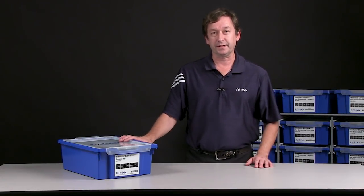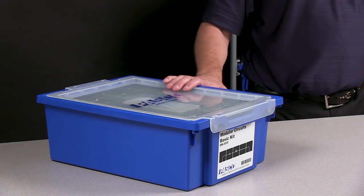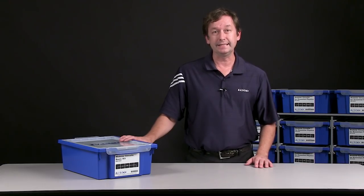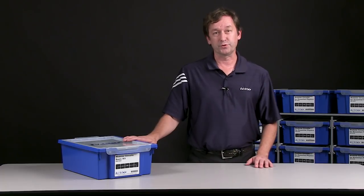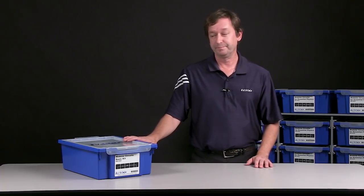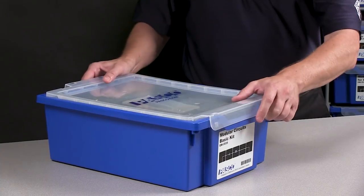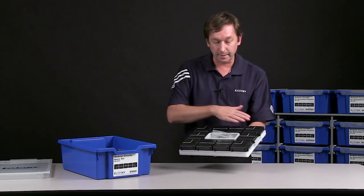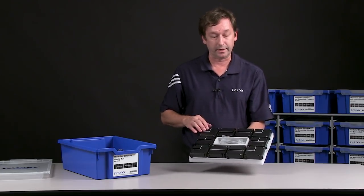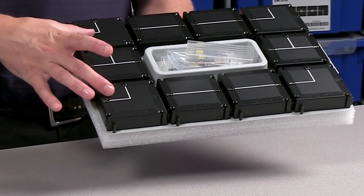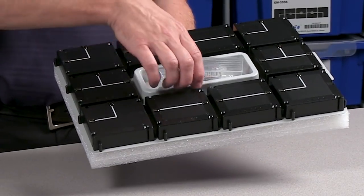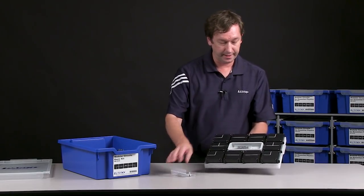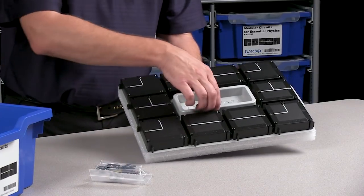So let's take a look at Modular Circuits, the basic kit. Each of the Modular Circuits kits comes in a Gratnells storage tray, which makes a nice, easy, convenient solution for storing all the modules in your classroom. So I'll take this lid off and we'll look at the top tray. And you'll see here, the top layer has all of our connecting wires. There are straights, there are corners, and there are T's.